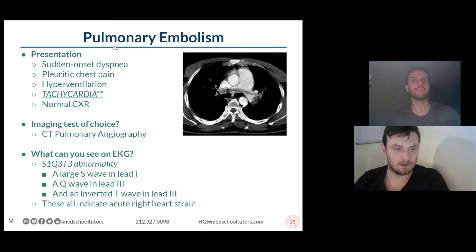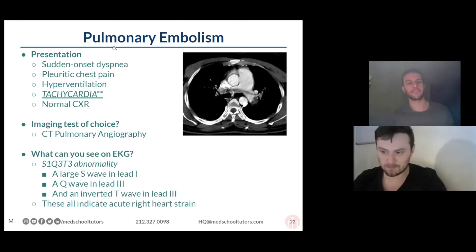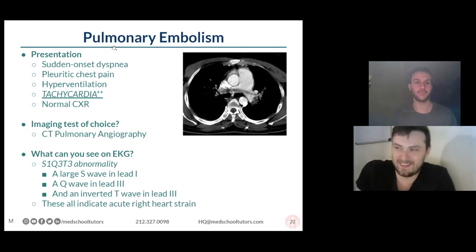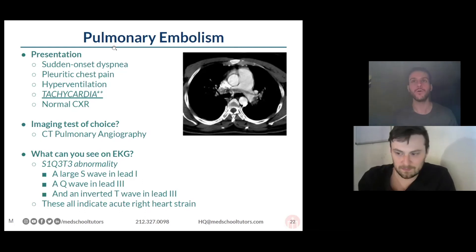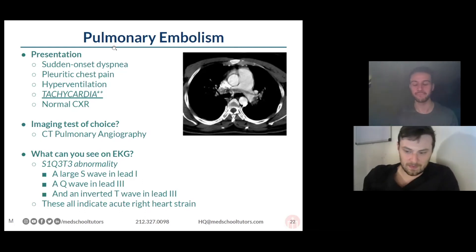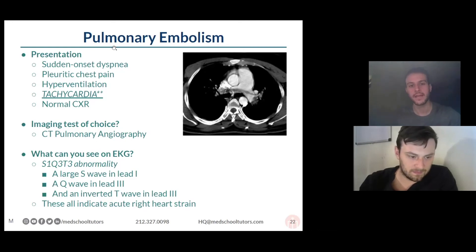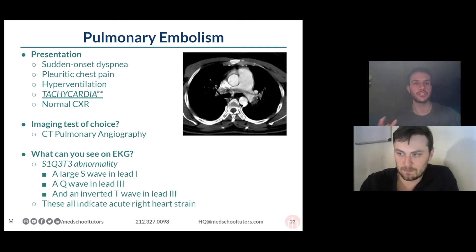Tachycardia is the most sensitive finding. They often talk about the S1Q3T3 abnormality with PE — it's very specific, meaning if you see it you probably have a PE, but if you don't, it doesn't rule PE out. Tachycardia, though, is very sensitive — very often patients who have a PE are tachycardic. Pleuritic means you have some irritation of the serosal surface that causes pain on inspiration.